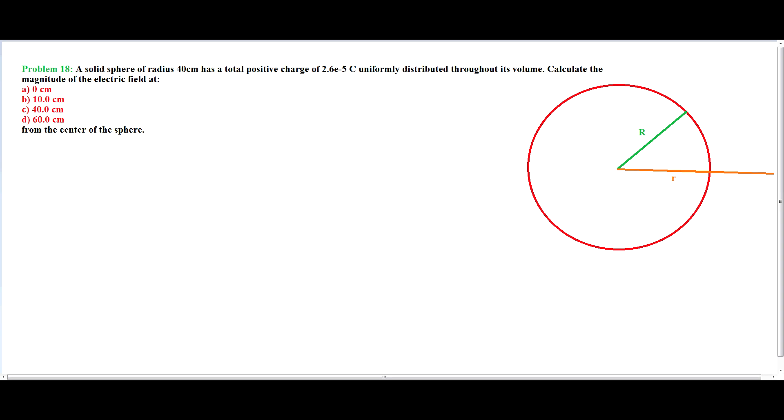Hello, I chose to do problem 18. Problem 18 asks: a solid sphere with radius 40 centimeters has a total positive charge of 2.6 times 10 to the negative 5th Coulombs uniformly distributed throughout its volume.